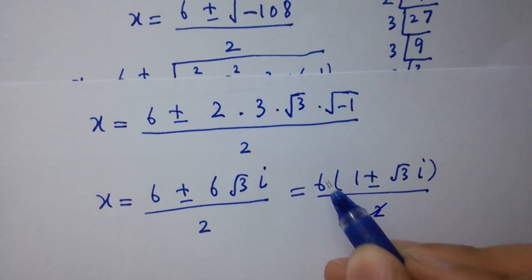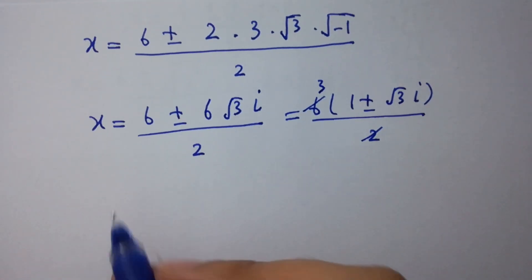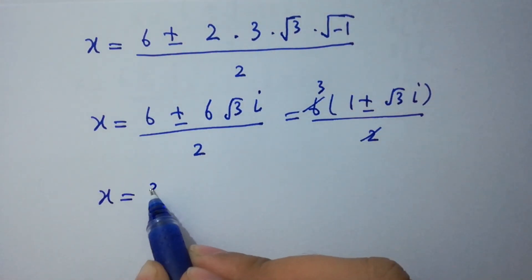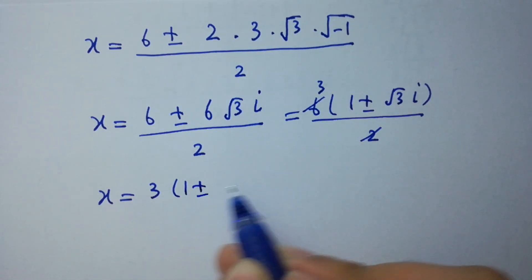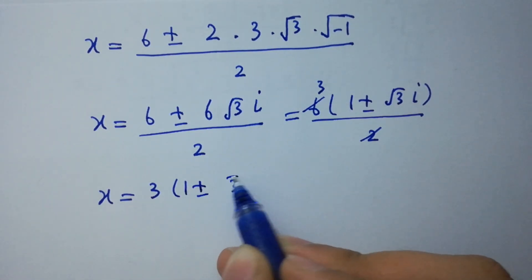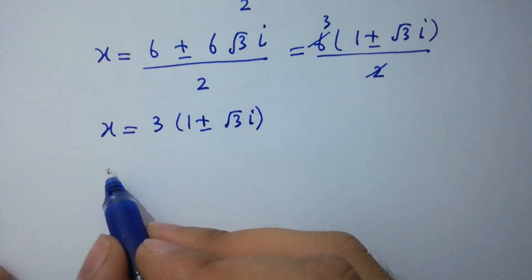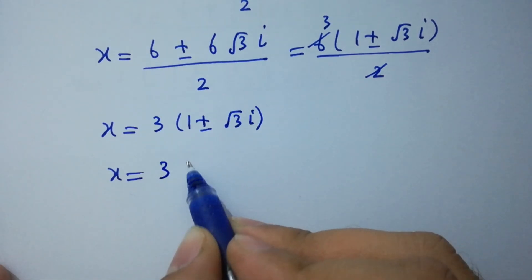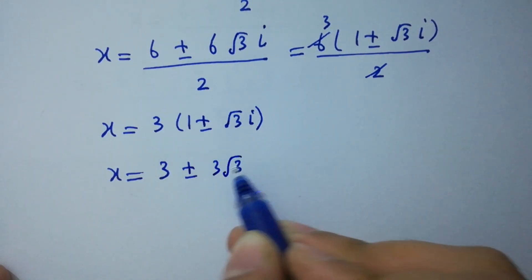Factoring out 2 from numerator and denominator: x equals 3 times (1 plus or minus square root of 3 i). So finally x equals 3 plus or minus 3 square root of 3 i.